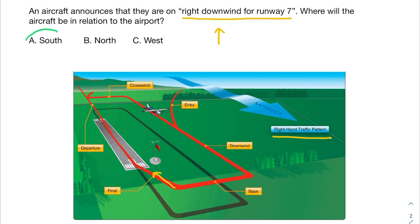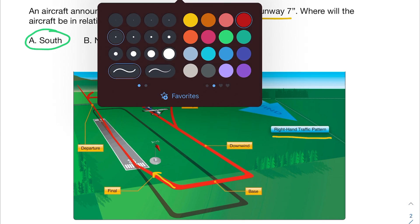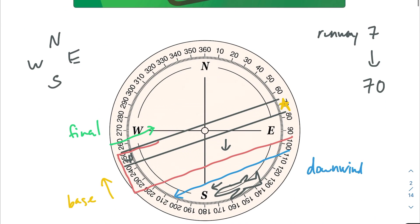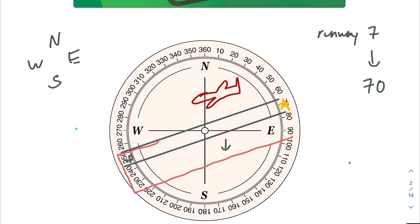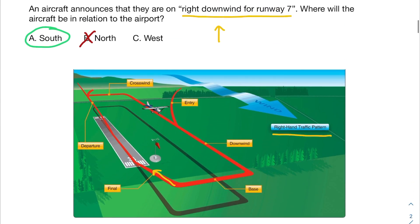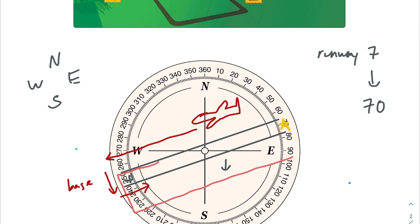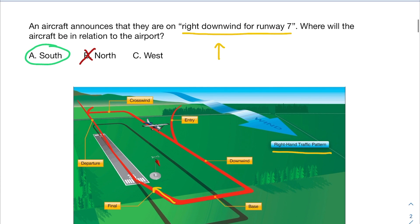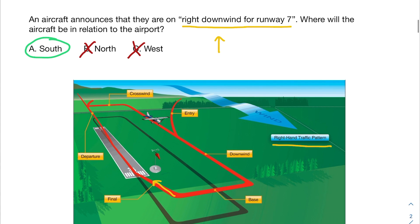South is the correct answer. Let's go through the other answers. North is incorrect — our airplane is not up there because we have the right hand traffic pattern. If this had been the left hand traffic pattern, then the downwind would have been on the other side, putting the aircraft north. It's also not west of the airport — that would have been true if we were on the base leg of the descent, but since we're on the downwind we are not west. The correct answer is south.